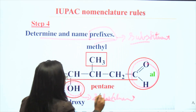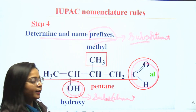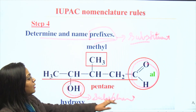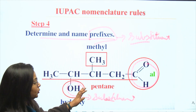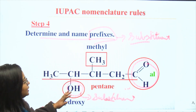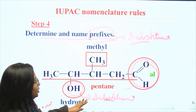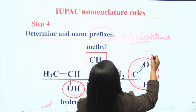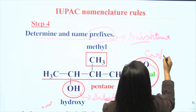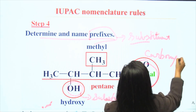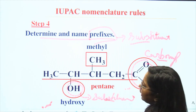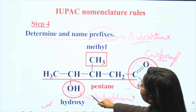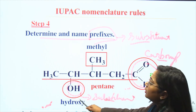Only one functional group can be prioritized as the main functional group, and the rest will be considered as substituents. In this particular compound we have two functional groups: carbonyl and hydroxyl. If we look at the priority order, we can identify that the carbonyl functional group is prioritized more than the hydroxyl. So we give priority to the carbonyl group over the hydroxyl group — carbonyl will be our main functional group and hydroxyl will behave as the substituent.